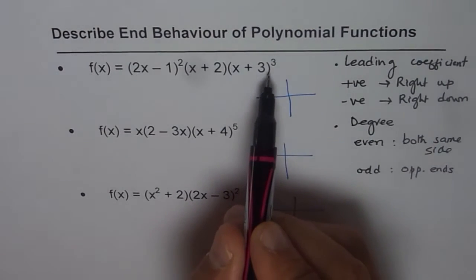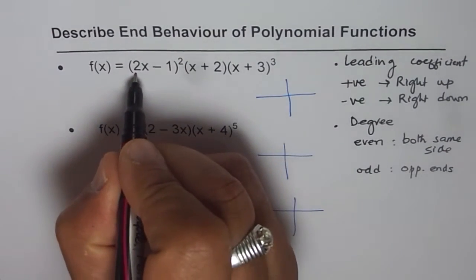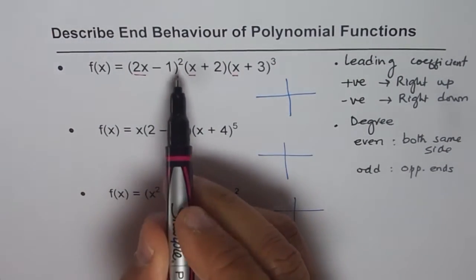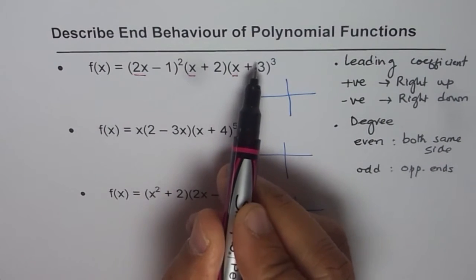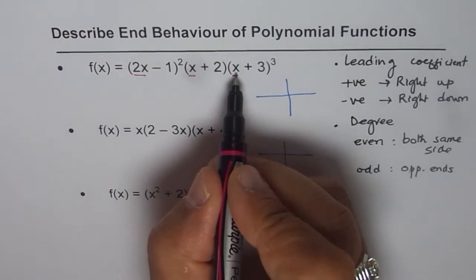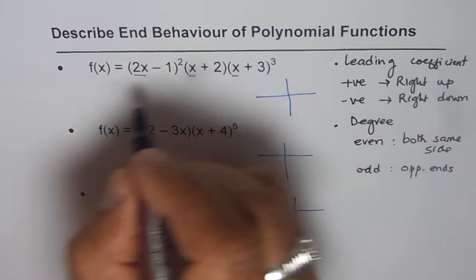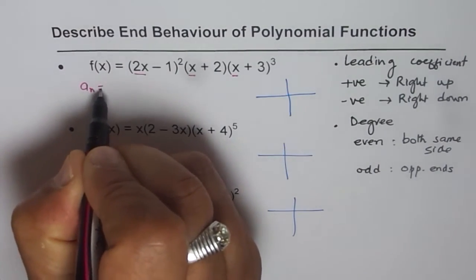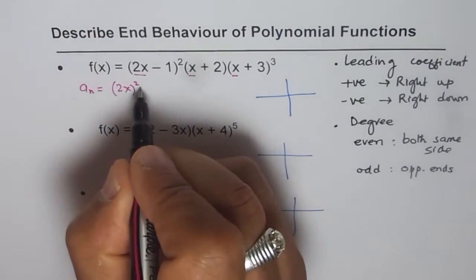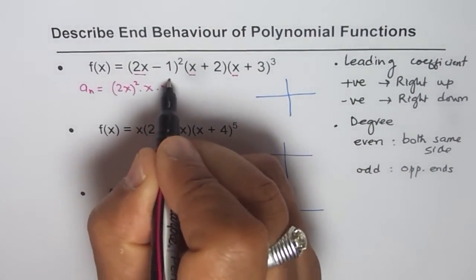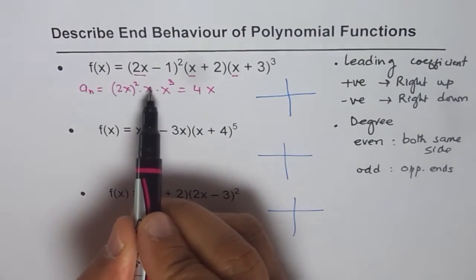For the first example, what is the leading coefficient? You get the leading term by multiplying the x terms together. In this case, 2x squared gives 4x squared, there is an x, and there is an x cubed. So the leading term is 4x squared times x times x cubed, which gives 4x to the power of 6.